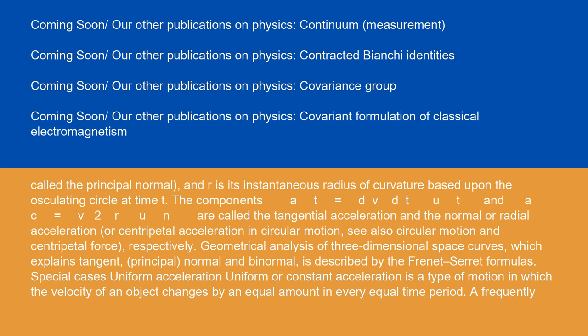Geometrical analysis of three-dimensional space curves, which explains tangent, principal normal, and binormal, is described by the Frenet-Serret formulas.